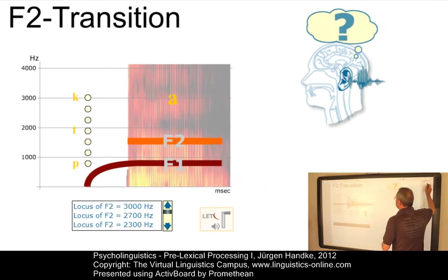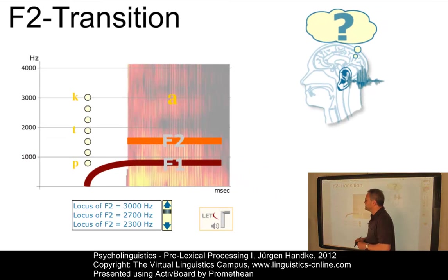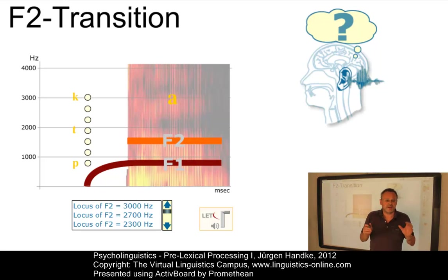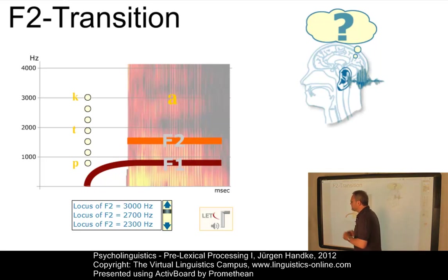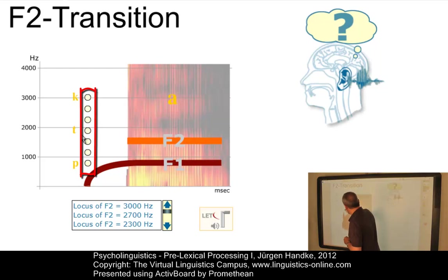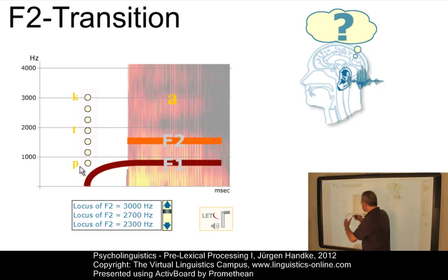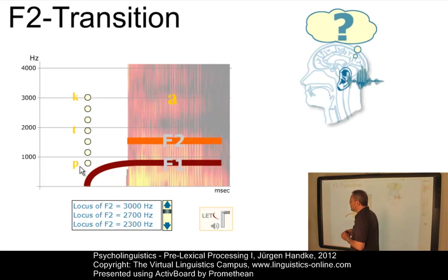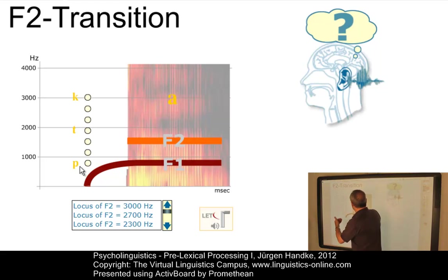Here is another acoustic cue: the Formant 2, or F2, transition. The formant pattern of vowels in isolation differs enormously from that of vowels embedded in a consonantal context. If a consonant precedes a vowel, the second formant F2 seems to emerge from a particular point: very high for K, intermediate for T, and very low for P. This frequency region from where F2 emerges is referred to as the F2 locus. A gradual change from high to low may result in a gradual change from K to P in a vocalic context.